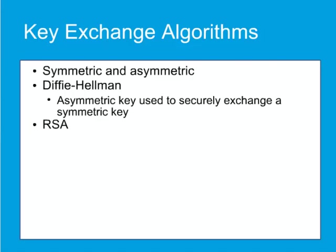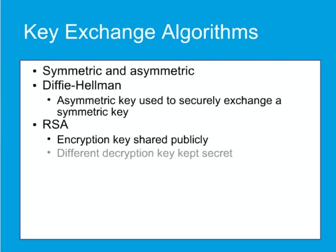RSA, which is an acronym of the initials of the three developers, was one of the first workable public key cryptosystems and is widely used for secure data transmission. The encryption key is shared publicly. A different decryption key is kept secret. Unlike Diffie-Hellman, the RSA algorithm can be used for signing digital signatures as well as symmetric key exchange, but it does require the exchange of a public key beforehand. All cipher suites supported by the proxy SG use the RSA key exchange algorithm.